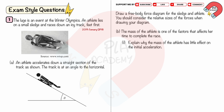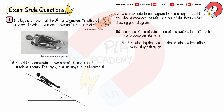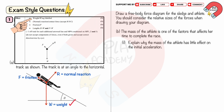Exam Style Question 1: The luge is an event at the Winter Olympics. An athlete lies on a small sledge and races down an icy track feet first. Part a: An athlete accelerates down a straight section of track at angle theta to the horizontal. Draw a free body force diagram for the sledge and athlete, considering the relative sizes of forces. Draw weight W acting downward, normal reaction R acting on the athlete perpendicular to the slope, and frictional force F acting up the slope. The length of W is greater than R, and R is greater than F.